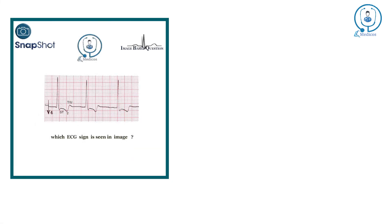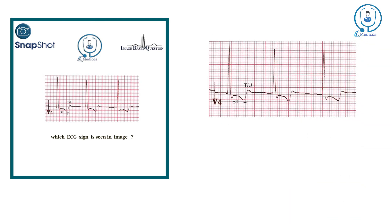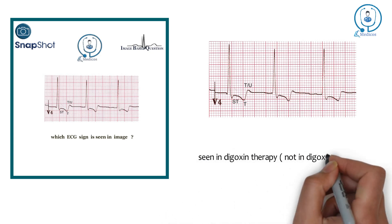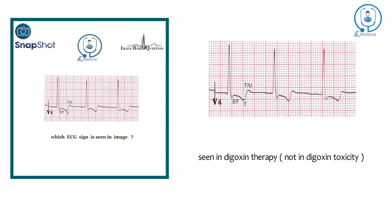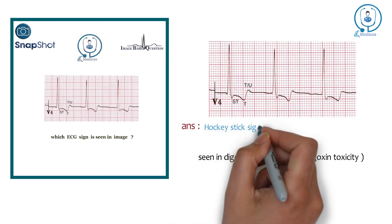Let's talk about our next question, which is also based on ECG. Which ECG sign is seen in this image? Let's zoom in on this ECG. Let's focus on the ST segment. You can see there is a down-sloping of the ST segment and the T wave rises above the baseline. This effect is generally caused by digoxin therapy. This effect is called the inverted tick mark, hockey stick, or Salvador Dali mustache sign.